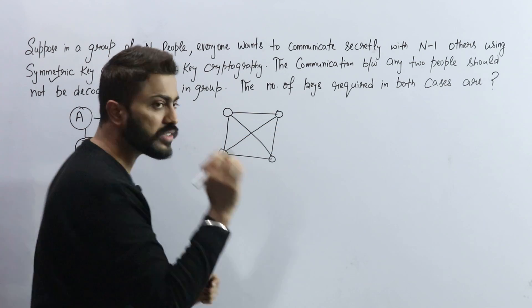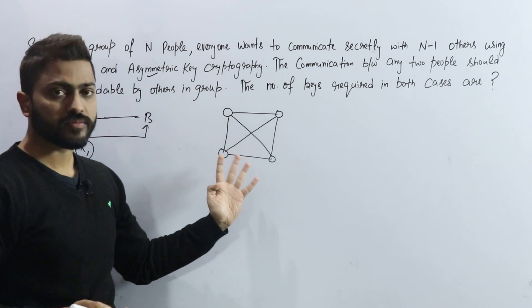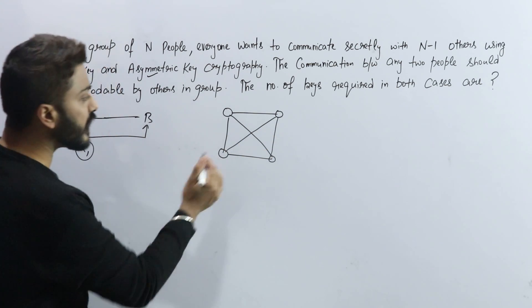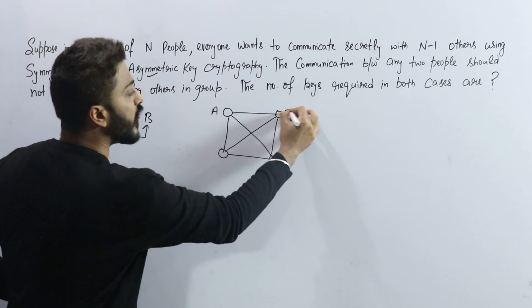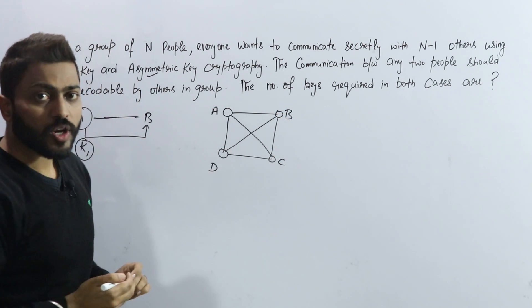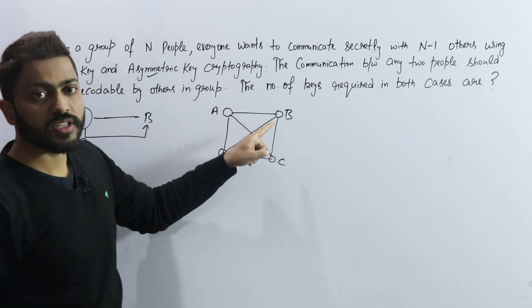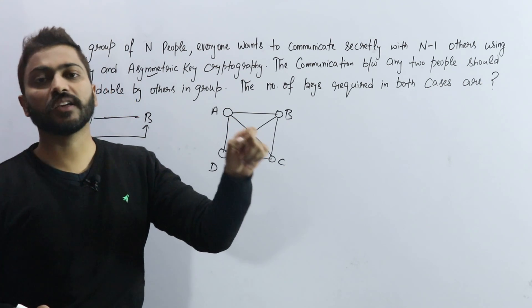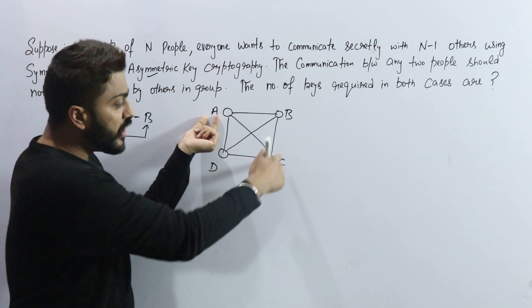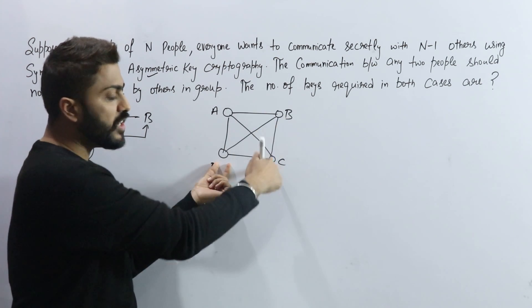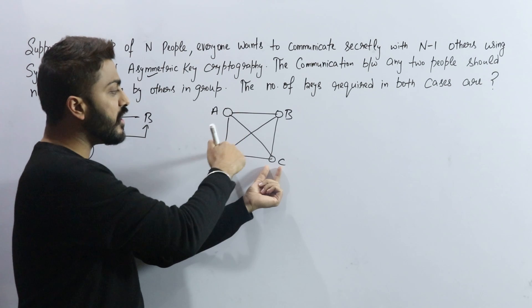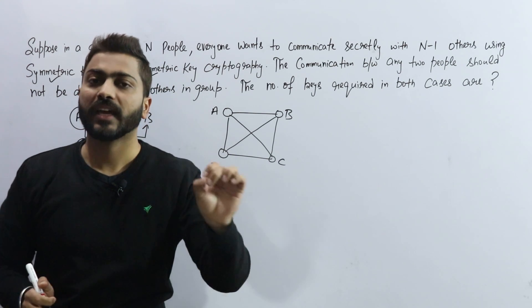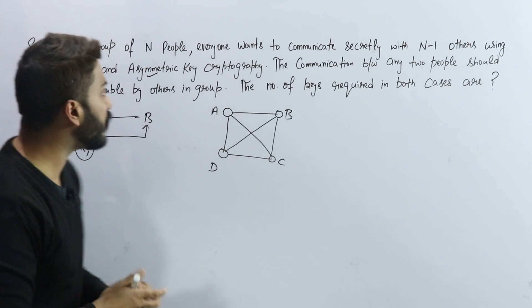Let's say there are 4 people: A, B, C, D. Everyone wants to communicate secretly with all others — that is, N people want to communicate with N-1 others. So A wants to communicate with B, C, D; D wants to communicate with A, B, C; C wants to communicate with A, D, B; and B wants to communicate with A, C, and D.